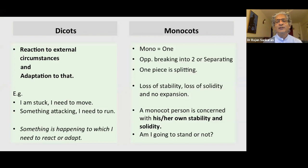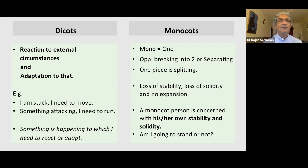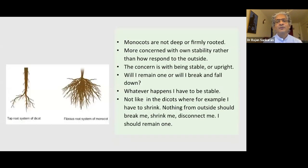Whereas in monocots, having one cotyledon, the idea is of breaking into two — separating, splitting, dividing — and therefore loss of stability and solidity. So in the monocot, the person is not so concerned about what's happening from outside, but about his own stability and solidity: am I going to be one, or am I going to be split up?